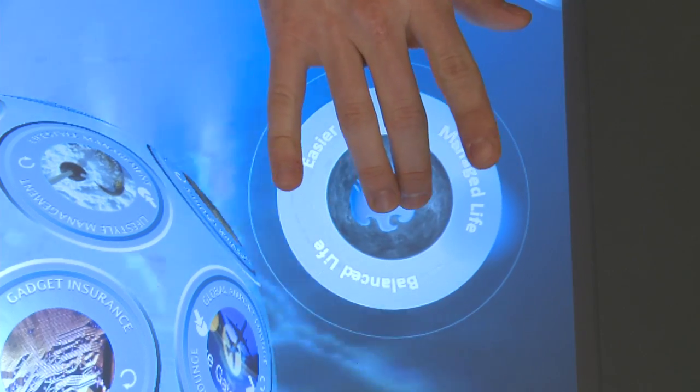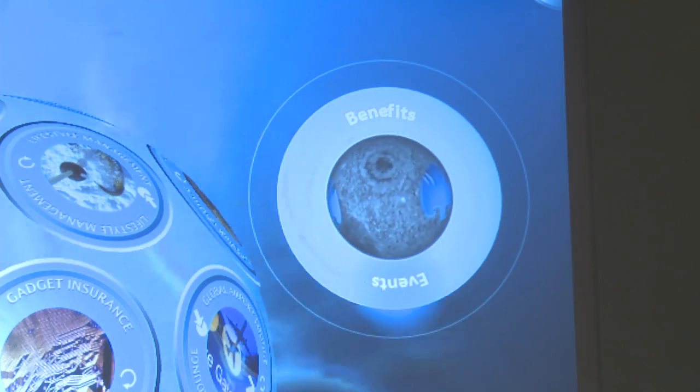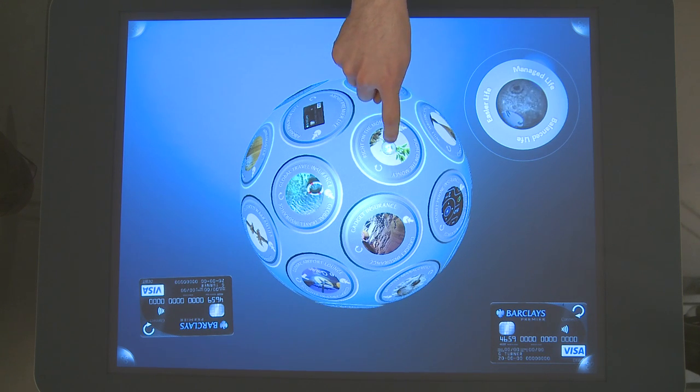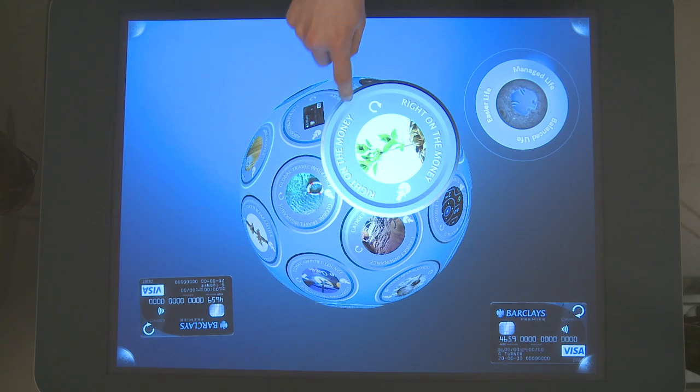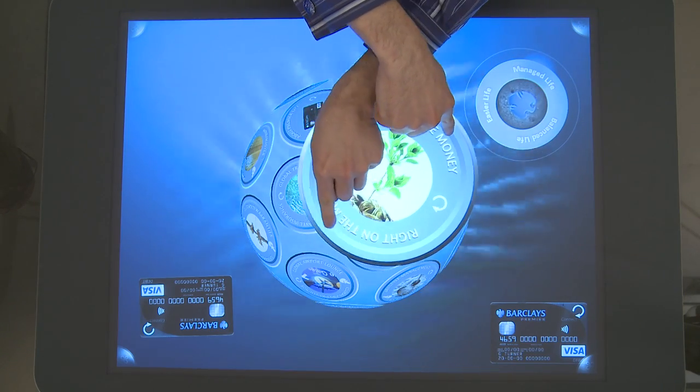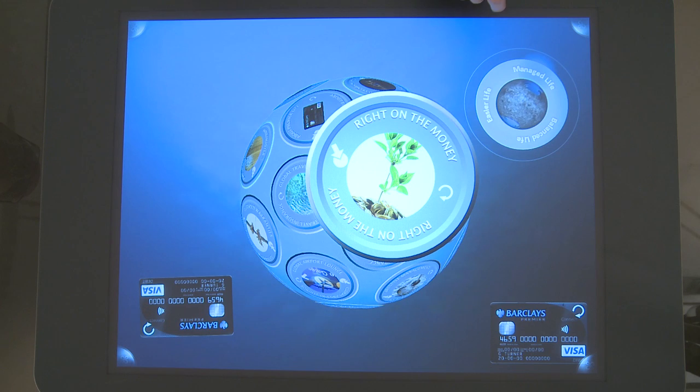We also have an event section, which gives you all the great events that you can go to once you become a Premier Life member. So if we want to pop information off the globe, we simply tap down on one of the items. It'll pop up. You can scale this coin that appears so you can get a better resolution of what's actually on it.